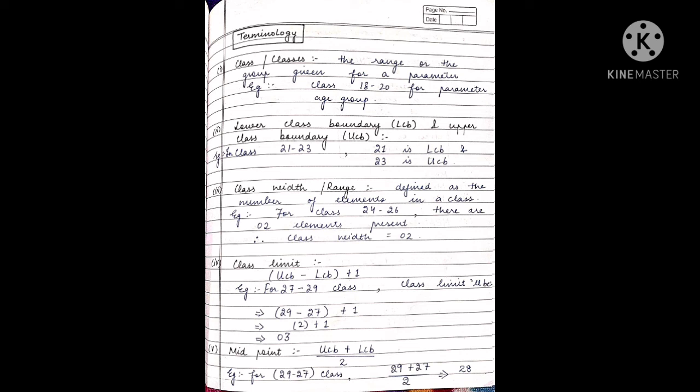Next is the midpoint. Midpoint is upper class boundary plus lower class boundary over 2. If we consider the example of class 27 to 29, then 27 plus 29 over 2. We've basically taken the average, which gives us 28, so the midpoint is 28.